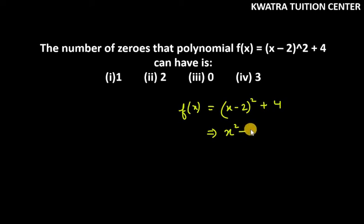Next value will be minus 2ab. So it will be 4x. Last value will be 2², that is 4. So you will have x². The second one will be minus 4x. The third one will be 4+4, which is 8.